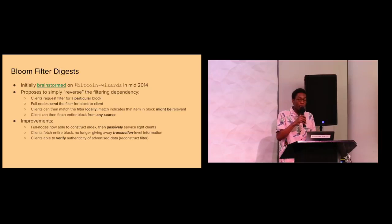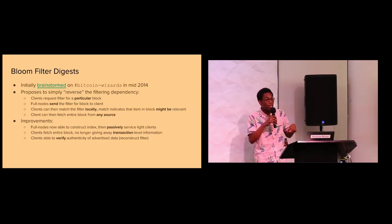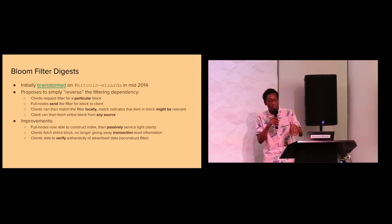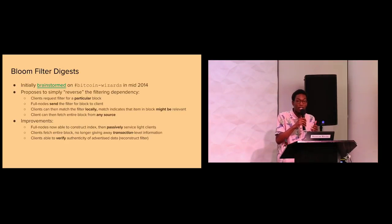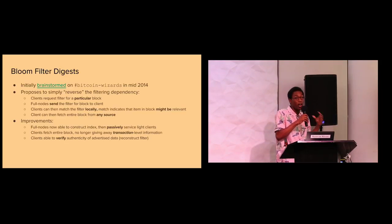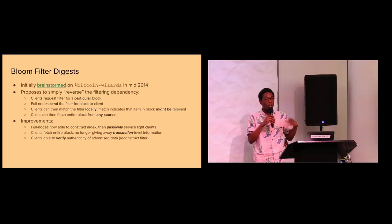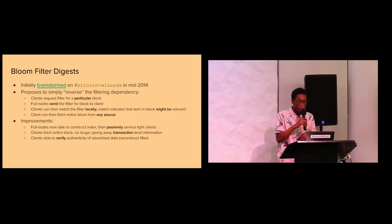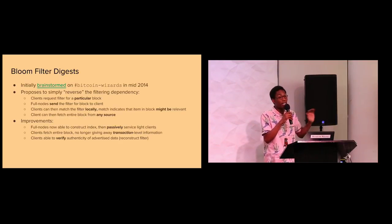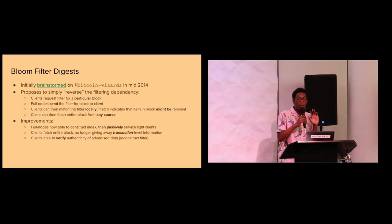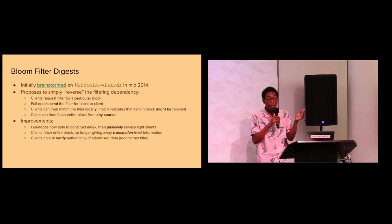If it's a wallet, it queries against its addresses or outpoints, and if there's a match, it might be relevant and the client can fetch the block from anywhere. The full node basically serves a very compact index — once the client has that index locally it can use it for all time, for initial rescans and for other future applications. This is a big win because now it's basically all passive: the full node does the work once, indexes the chain, and then can amortize that work over many light clients. Additionally, the full node no longer sends individual transactions, which allowed easy transaction-level intersection attacks; now the entire block is fetched and may not necessarily be fetched from the same node that served the filter.